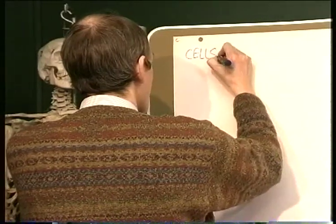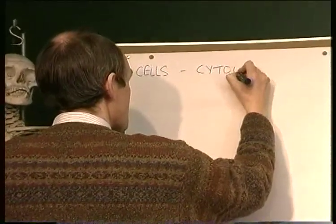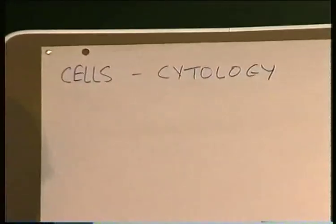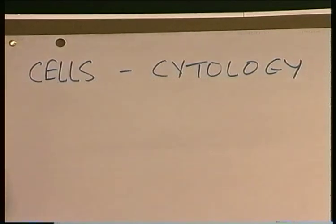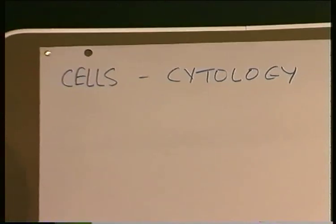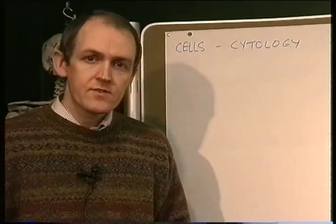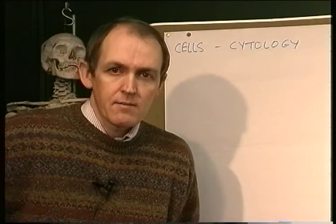The subject is cell biology, and the correct name for the study of cells is cytology. Now there are different ways you can study cells, and one is by using a light microscope. If you look at cells under a light microscope you'll see something which is vaguely like this. So let's draw a diagram of what cells look like under a light microscope — a generalized animal cell as seen under the light microscope.